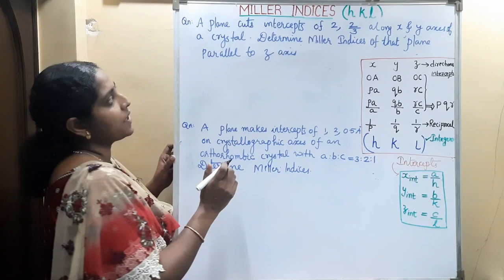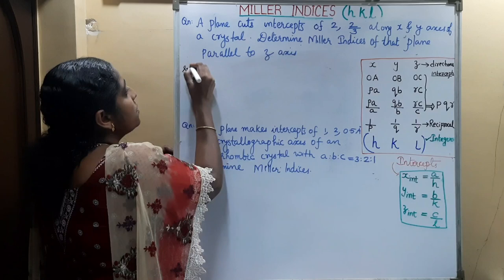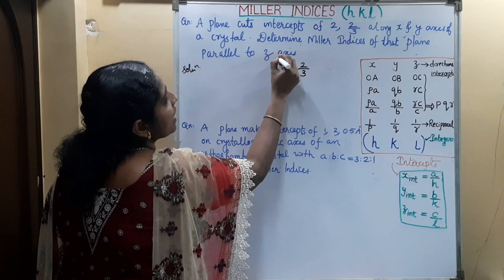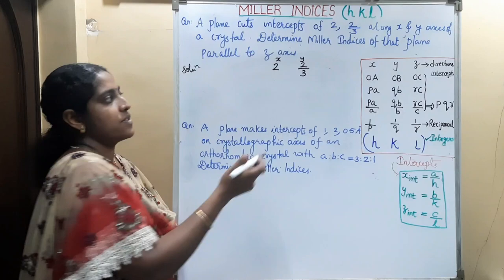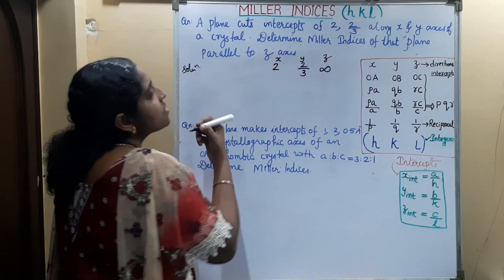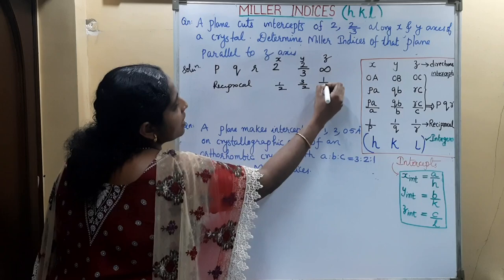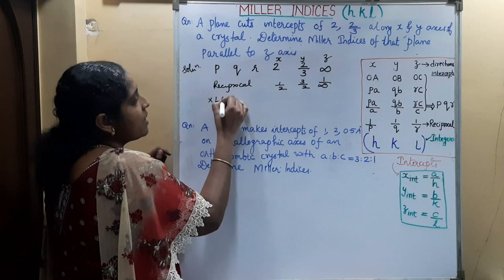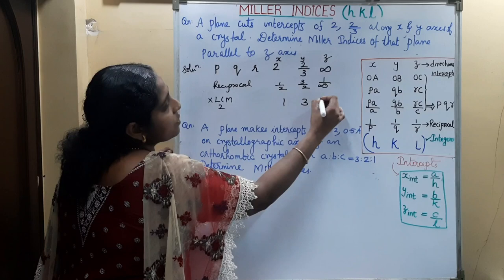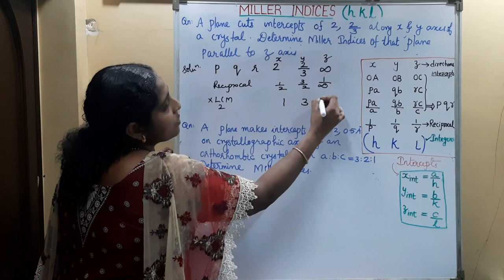Next problem: A plane cuts intercepts of 2 and 2/3 along the x and y-axes of a crystal. Determine the Miller indices of that plane parallel to the z-axis. Since the plane is parallel to the z-axis, the z-intercept is infinity. P, Q, R = 2, 2/3, ∞. Taking the reciprocal: 1/2, 3/2, 0. Multiplying by LCM = 2: 1, 3, 0. The Miller indices are (1, 3, 0).